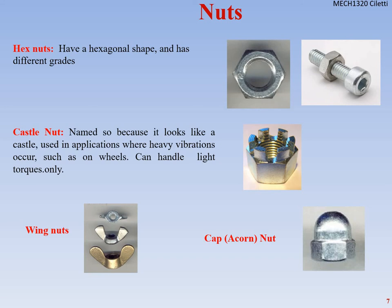Moving on to nuts. We have hex nuts — hexagonal shape with six sides. We have castle nuts, which look like a rook or castle at the top. We use castle nuts in applications with heavy vibrations, like on wheels. They can only handle light torques because they're not quite as strong.